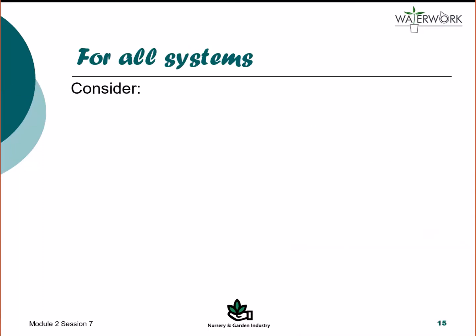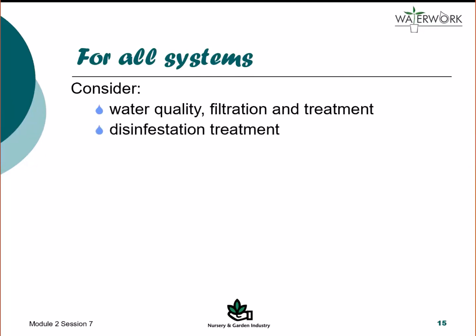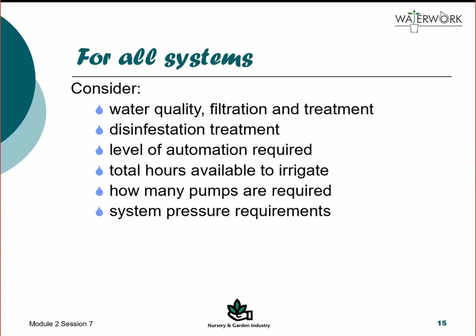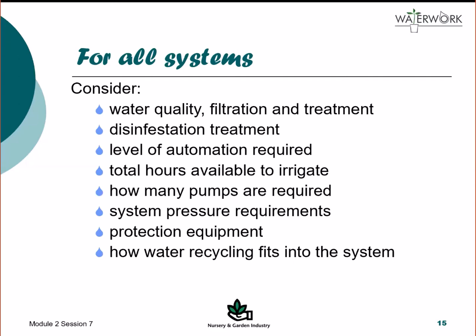Once the best system is selected, the following factors should be assessed: the level of water quality required and how to achieve this through filtration and treatment; the most suitable water disinfestation treatment to remove plant pathogens; the level of automation that suits the management needs and budget constraints; the total number of hours the irrigation system will operate in summer; the number of pumps required and what backup facilities are needed; installation of strata valves or pressure measurement to set and check pressure of each block, shutoff pressure of the pump, pressure loss across filters and pump operating pressures; and how the recycling system will be integrated into the irrigation design.